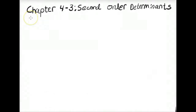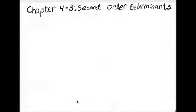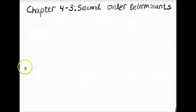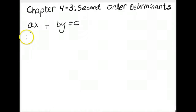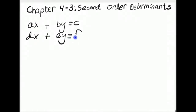I'm first going to go through the proof of this rule and how Cramer's Rule works using variables, and then I'll do an example problem. The general system of a linear equation with two variables is going to look like AX plus BY equals C, and then the second equation is going to be DX plus EY equals F, where A, B, C, D, E, and F are all going to be coefficients.